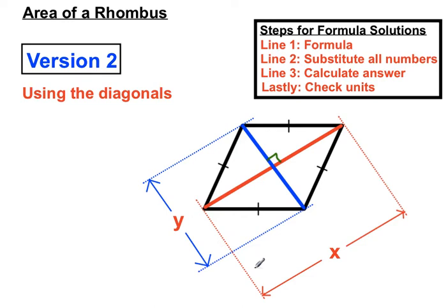If we're given the lengths of the diagonals there. We've got, see the red diagonal, that's kind of indicated. The length of that's kind of indicated by the X there. And the blue diagonal, that's indicated by the Y. So when we are given the lengths of the diagonals, we can use this version of the formula.